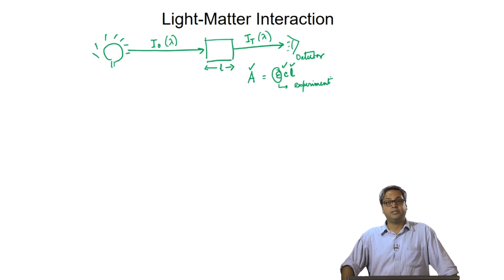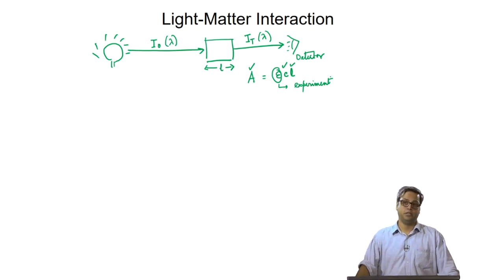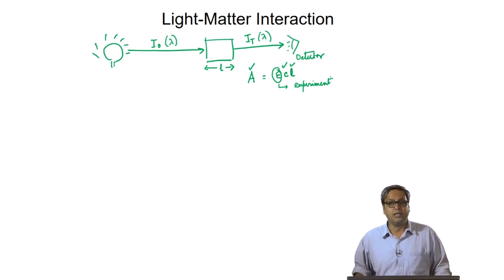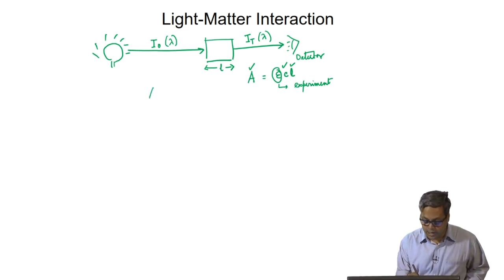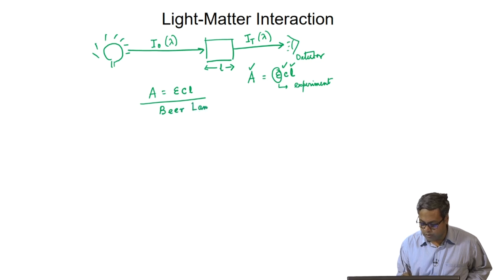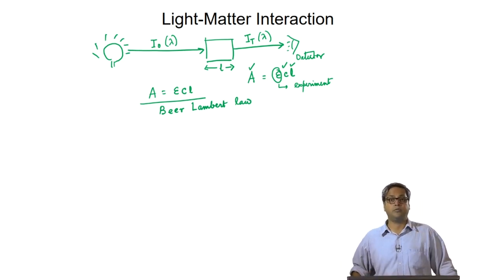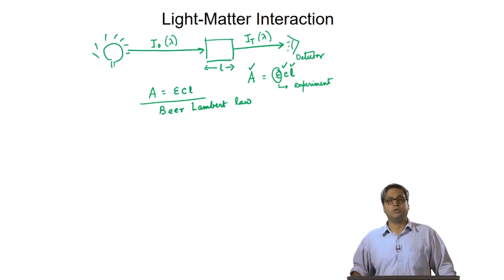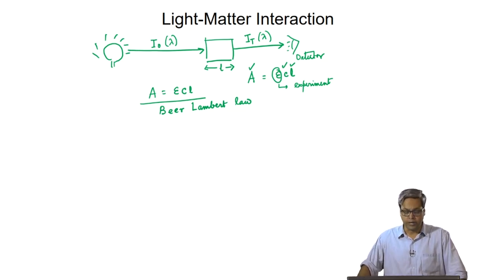Since ε is directly proportional to B, epsilon is related to the transition probability that comes from theory. If we have the knowledge of the wave function we can calculate B. This equation A = ε·C·L is a fundamental equation in spectroscopy where we can compare experiment and theory. This equation is known as the Beer-Lambert law. Historically, Lambert found that absorbance is proportional to L, and much later Beer discovered that absorbance is proportional to concentration C, and these two findings were combined to obtain the Beer-Lambert law.